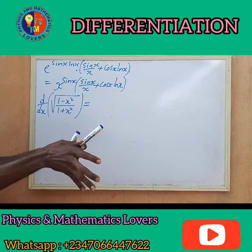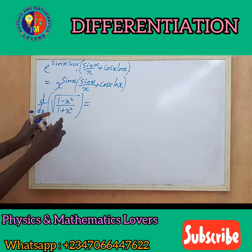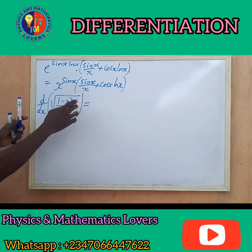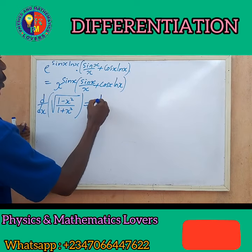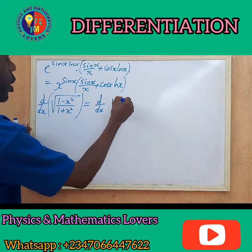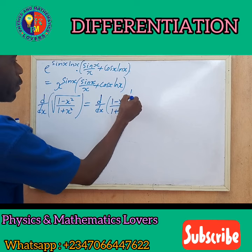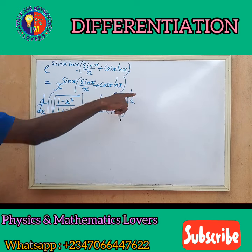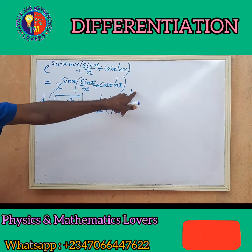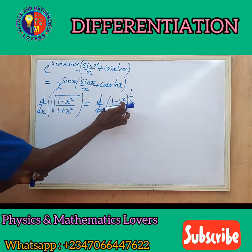Remember that the square root means raised to the power half — so the whole expression is [(1 minus x squared)/(1 plus x squared)] raised to the power half. The differential coefficient of this, using chain rule: I take the power (half), bring it to the front, reduce the power by 1 to get negative half, then multiply by the differential of the inside (the quotient). Inside, I use the quotient rule.